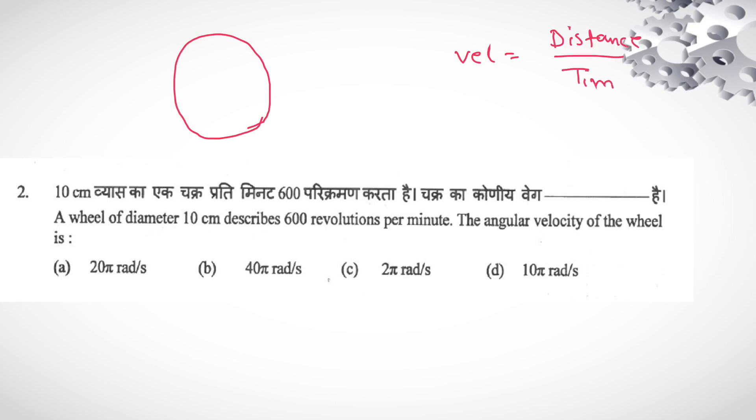Velocity is distance divided by time. Or angular velocity: radian it covered divided by time. Angular velocity or omega equals θ divided by time. So here,